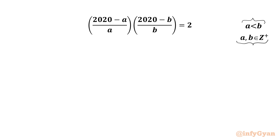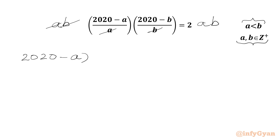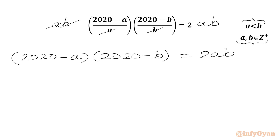Let us get started by multiplying a·b to both sides of our equation, since a and b are positive integers. We can cancel the denominators a and b, and write (2020 minus a)(2020 minus b) equal to 2ab. Now we will simplify our LHS: we get 2020 squared minus 2020a.